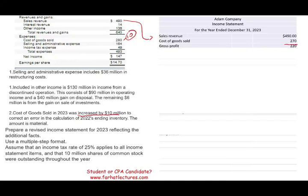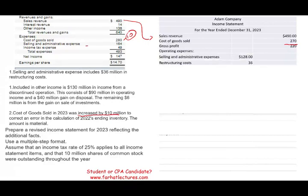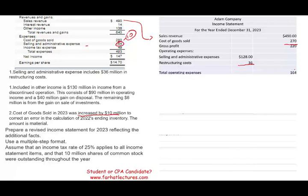From gross profit, we deduct operating expenses, which consist of selling and administrative expenses and restructuring costs reported separately. We had to report restructuring costs on its own line — it's a separate, important item under GAAP. We add up all operating expenses and they total $164 million, although they must be reported separately according to GAAP.